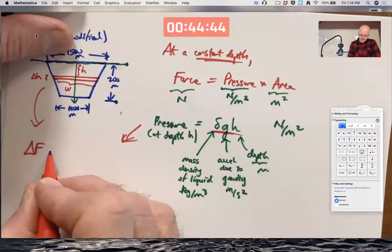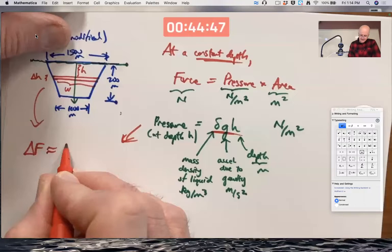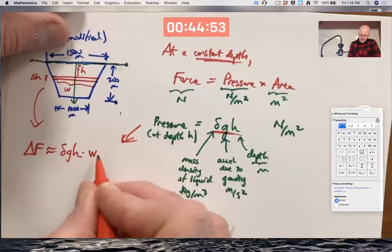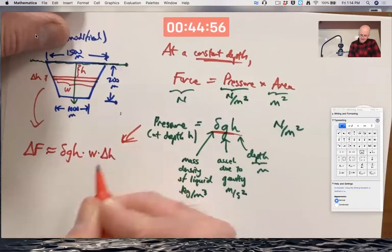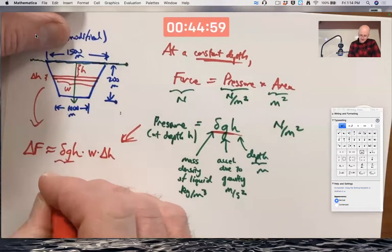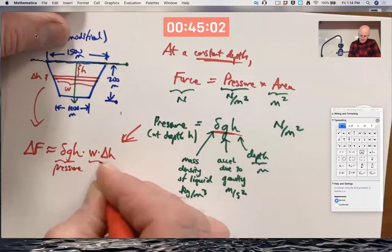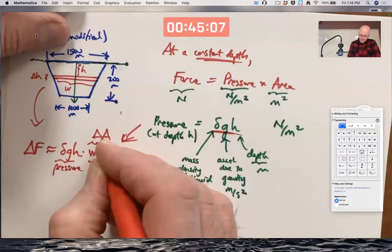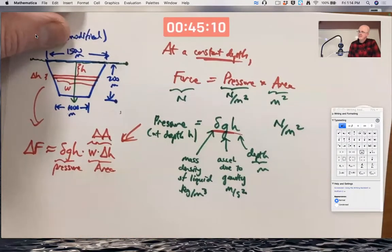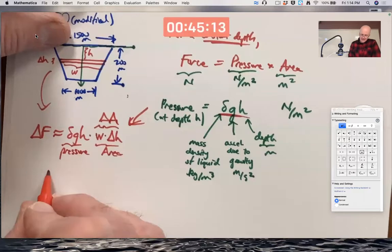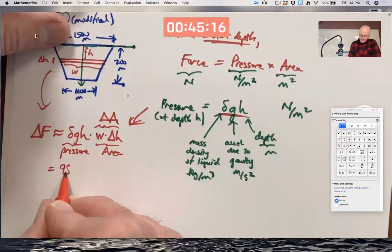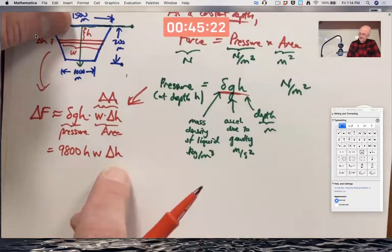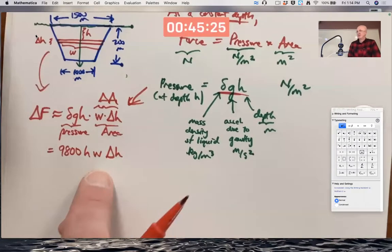Pressure is delta times G times H. Area is W times delta H. Pressure times area. Again, delta is a thousand, G is 9.8. So this becomes 9,800 H times W times delta H. I am ultimately going to integrate with respect to H because I got a delta H in there. I've got to figure out how W depends on H.